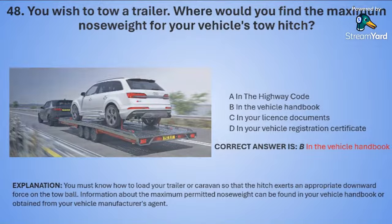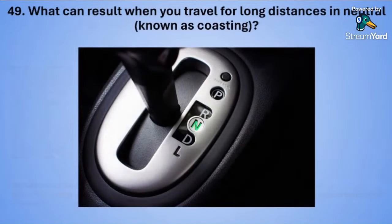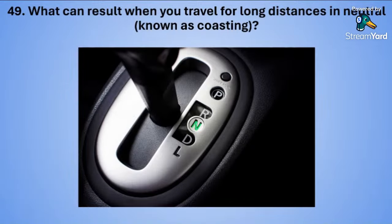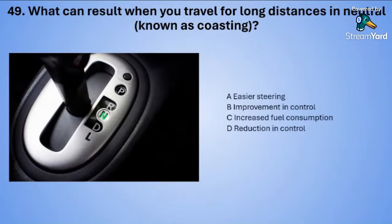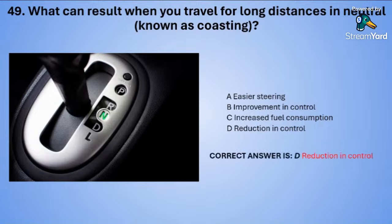Question forty-nine: What can result when you travel for long distances in neutral, known as coasting? A: easier steering. B: improvement in control. C: increased fuel consumption. Or D: reduction in control. The correct answer is D — reduction in control.